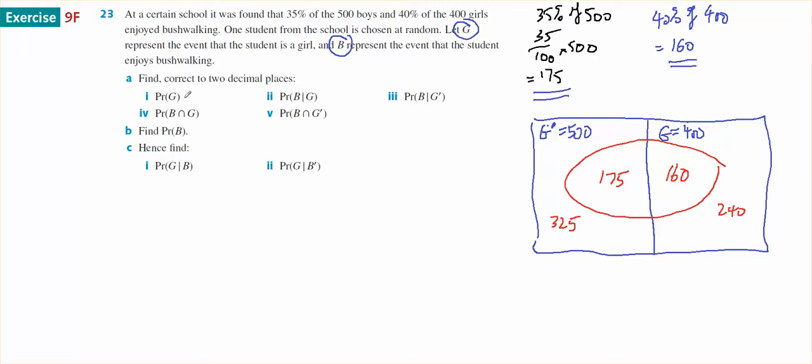Probability of G. G is 400 out of a total of 900, so 400 over 900, or 4 ninths.